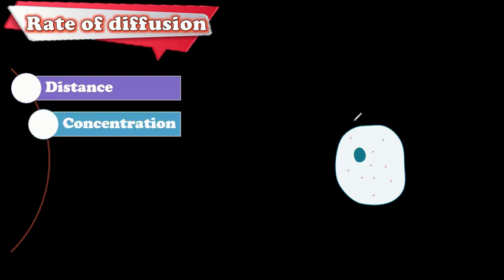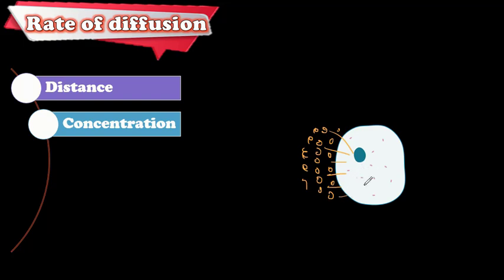The second factor is concentration. If you have a high concentration of particles outside the cell and a low concentration inside, more diffusion will take place. High concentration difference leads to high diffusion; low concentration difference leads to low diffusion.